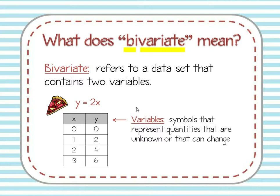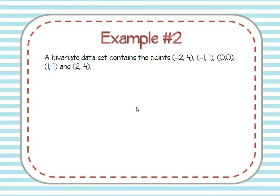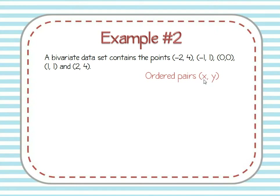Just like in our previous pizza example — we had two variables, X and Y: the number of slices and the total cost in dollars. Those were our two related quantities, our two variables. A variable is just a symbol that represents quantities we don't know or quantities that can change. Make sure you have all these vocabulary words written down in your notes. So that fancy word 'bivariate' just means there are two variables.